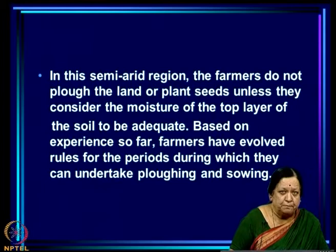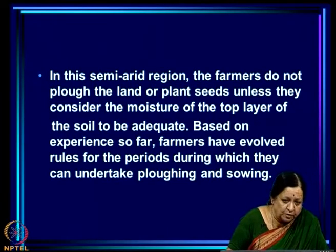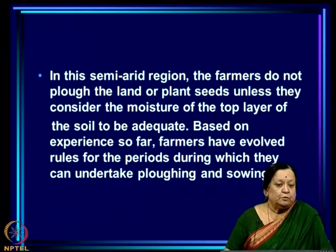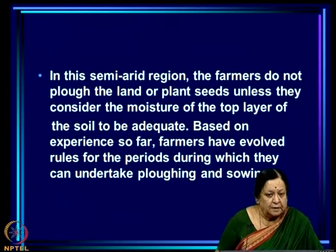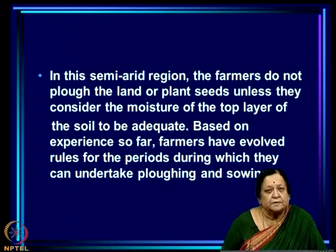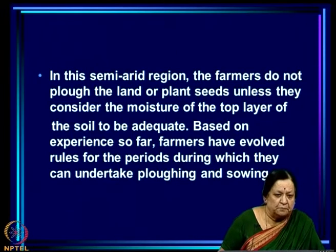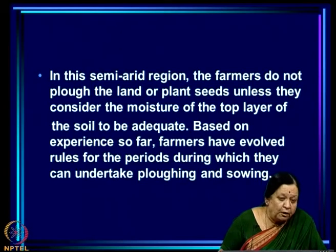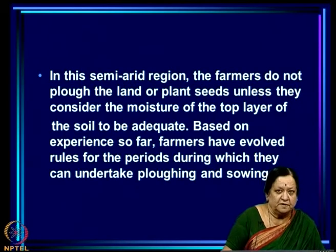In this semi-arid region, farmers do not plough or plant seeds unless the moisture of the top layer of soil is adequate. Not only must soil moisture be adequate for sowing, but land preparation operations — ploughing and harrowing — also require the soil to be sufficiently moist. We need to generate a model that gives how soil moisture varies in a year given rainfall variation, and from that determine when the farmer can plough, harrow, and sow.